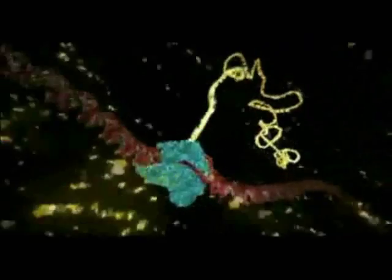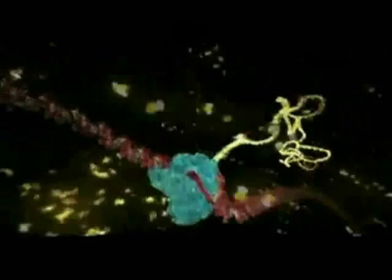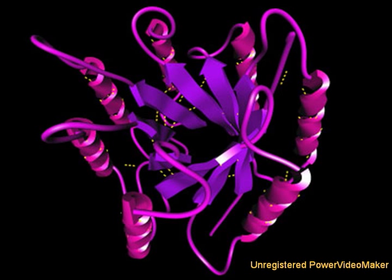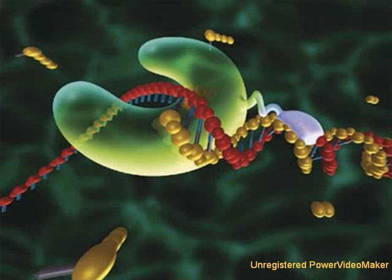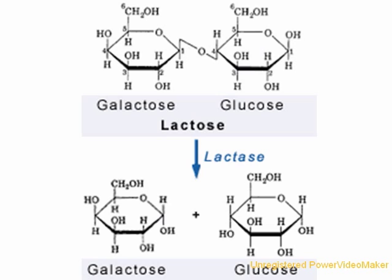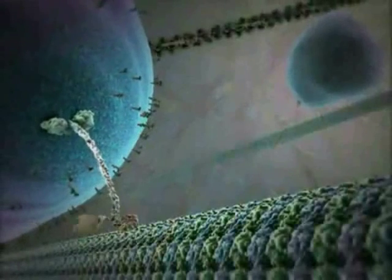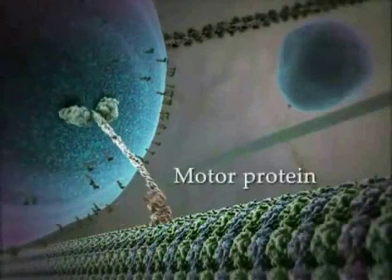A gene can simply be defined as a stretch of DNA that is transcribed into RNA, and most RNA is then translated into protein. Each protein is a unique contiguous chain of amino acids evolved to perform some task in the cell. Some proteins act as structural support, some proteins copy the DNA, some proteins help metabolize sugars, and some proteins are motors that move cargo around inside the cell.